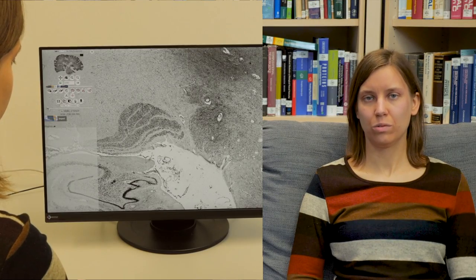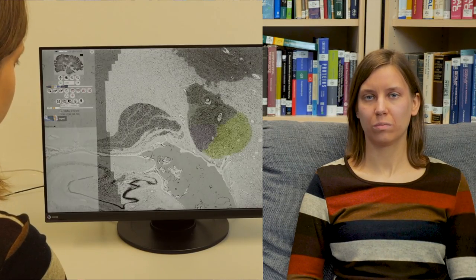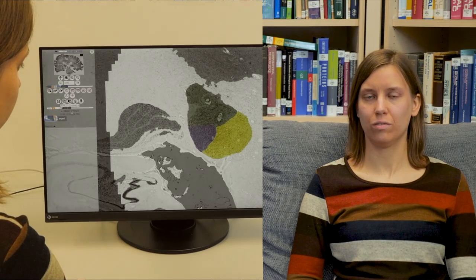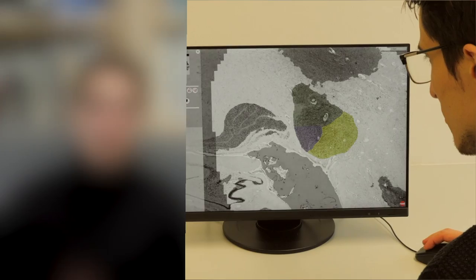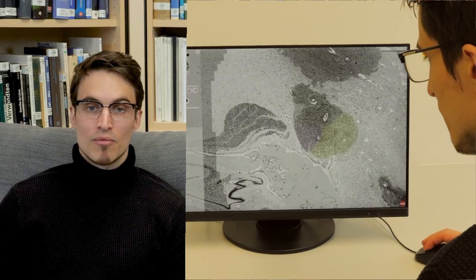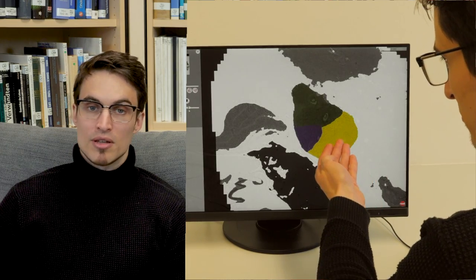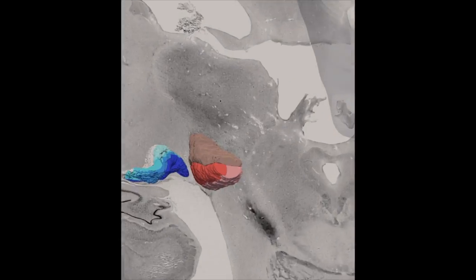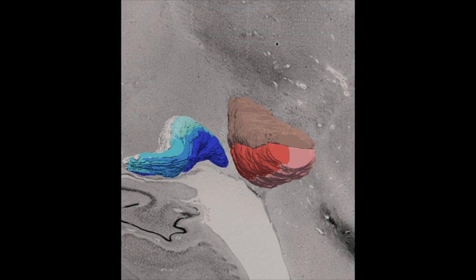A deep learning-based tool helped us create segmentations on every single section of our structure. By applying this tool, we learned about the topography as well as the cytoarchitecture of the metathalamus. Then we created 3D reconstructions of the six layers of the lateral geniculate body.